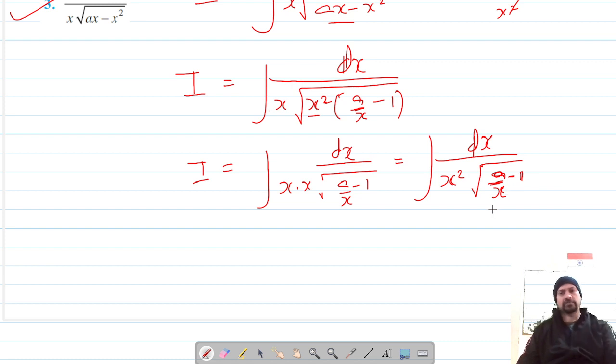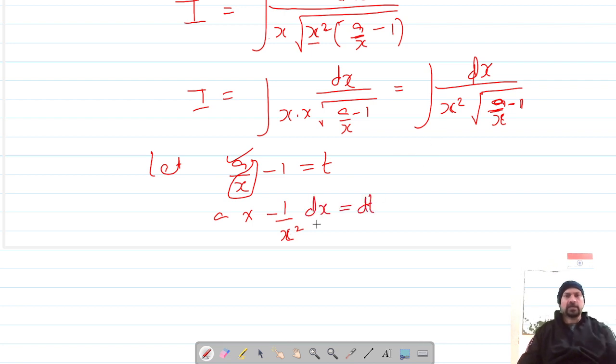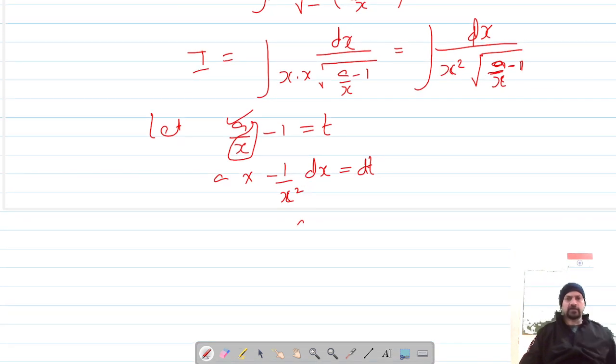Now whatever is in the root, I can substitute it as t. Let me substitute a over x minus 1 as t. So a is constant, and differentiation of 1 over x is negative 1 over x squared. So dx over x squared is negative dt over a.